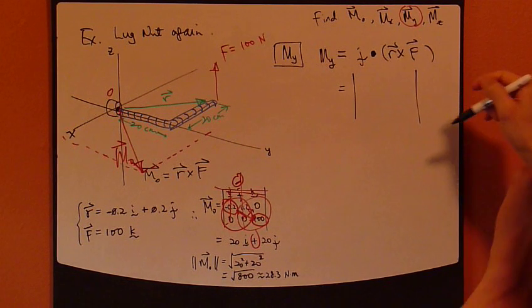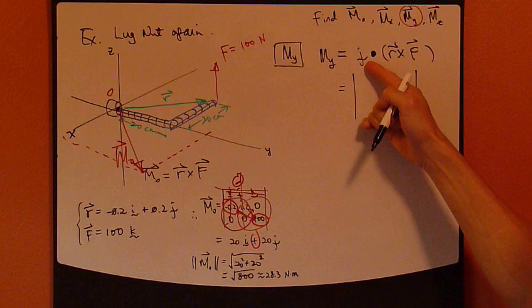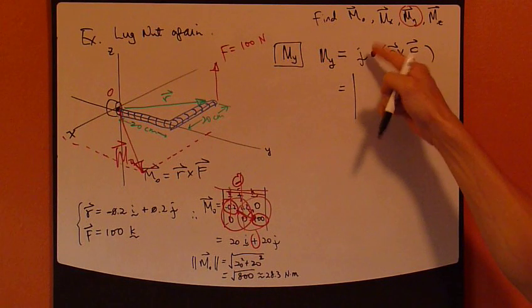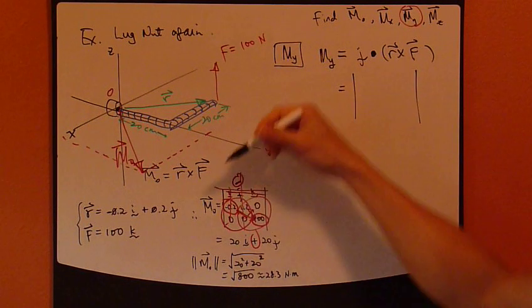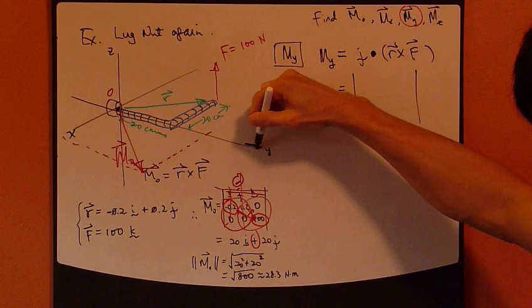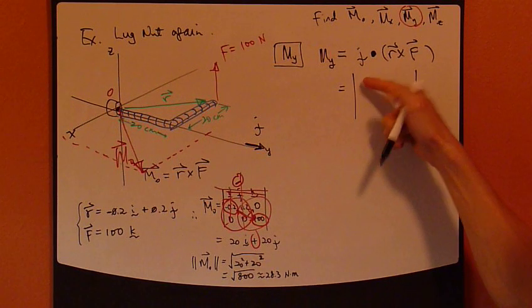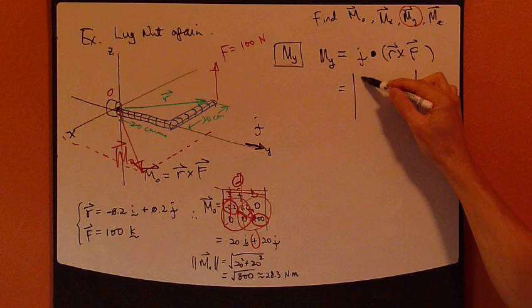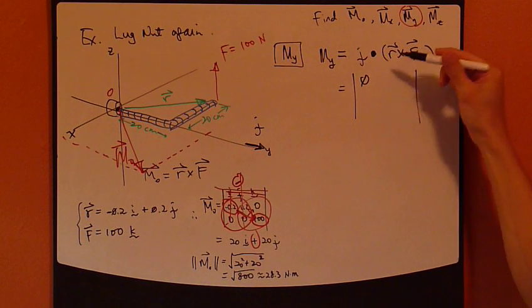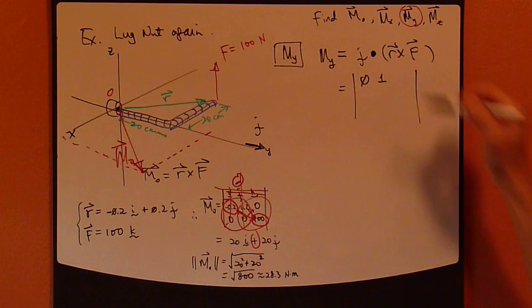First row is the component of this first vector, which is the j vector. Alright? The j vector along the y axis. So, the x component of the j vector is 0. The y component is 1. Okay? The magnitude is 1.